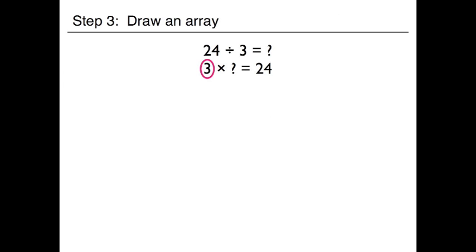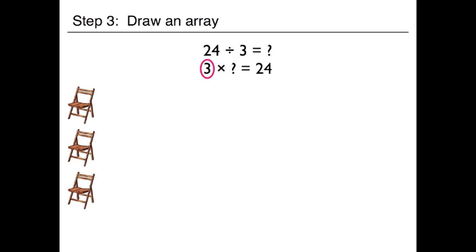Now that we have turned it into a multiplication problem, let's use an array to help us find the missing factor. Remember, an array is a set of objects arranged in equal groups or rows. Looking at our problem, the 3 tells us that we have 3 rows. We need to figure out how many are in each row.